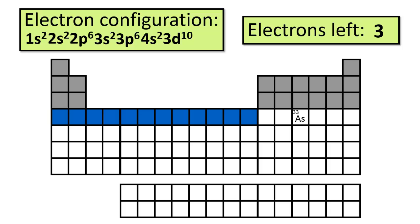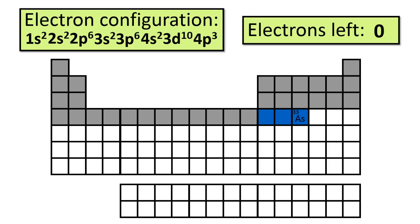We've got three electrons left, so they'll go in the 4p orbitals. Our finished product is 1s² 2s² 2p⁶ 3s² 3p⁶ 4s² 3d¹⁰ 4p³. Of course, we can abbreviate this and write the electron configuration as [Ar] 4s² 3d¹⁰ 4p³.